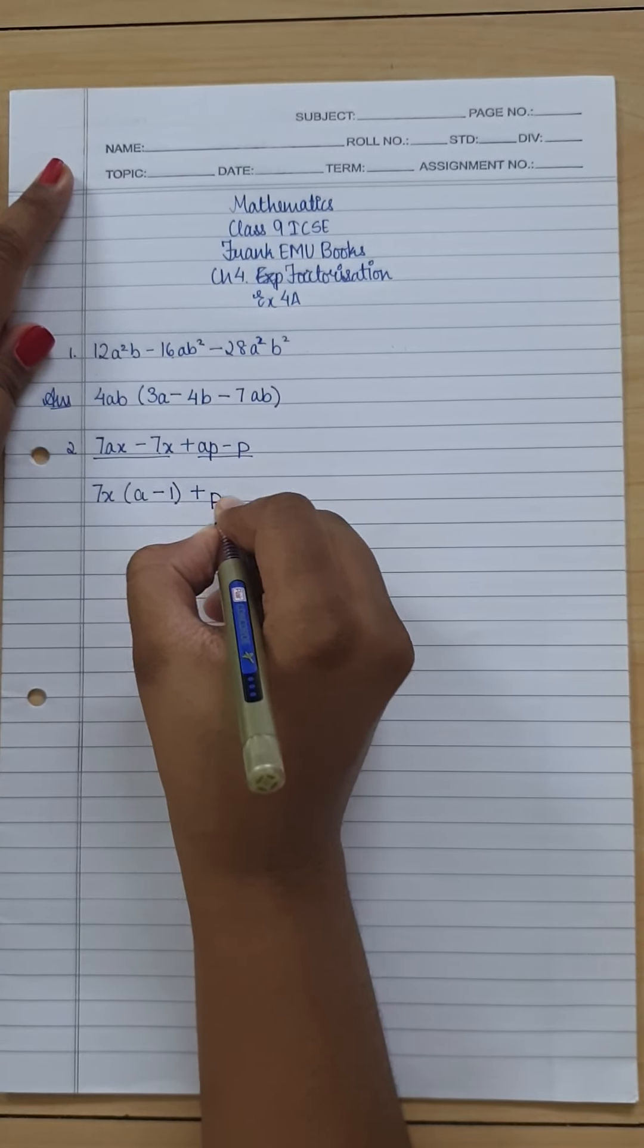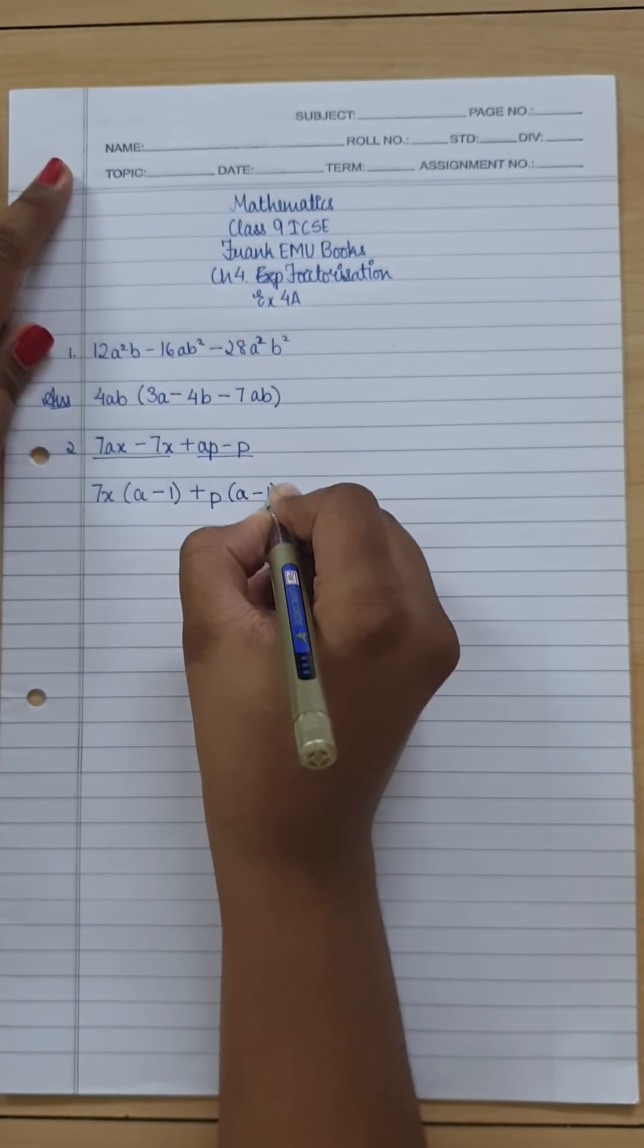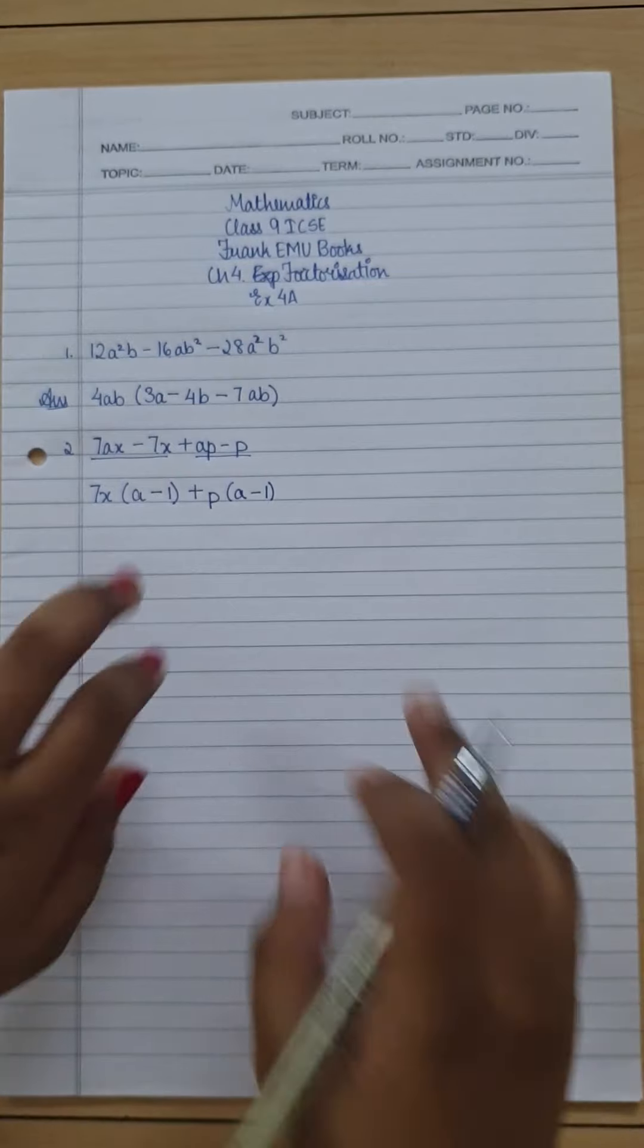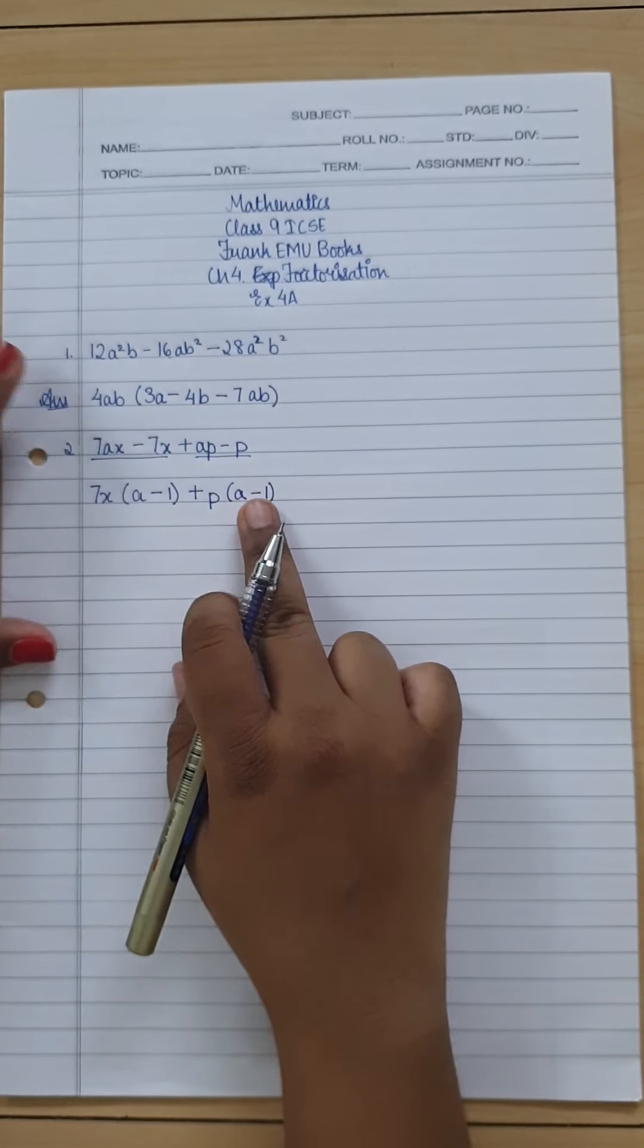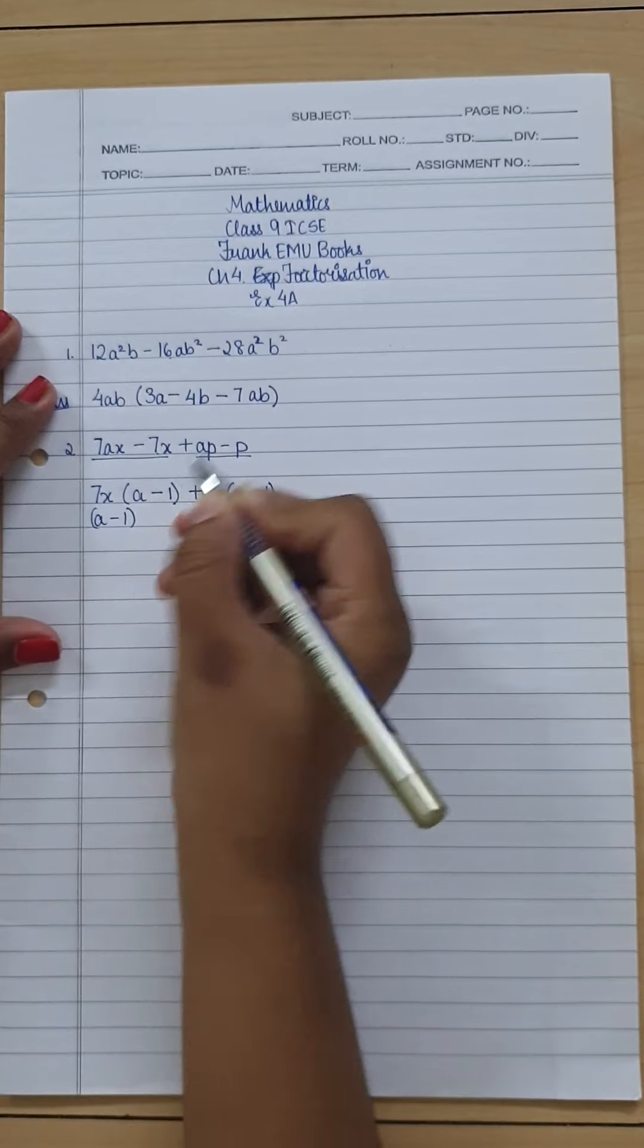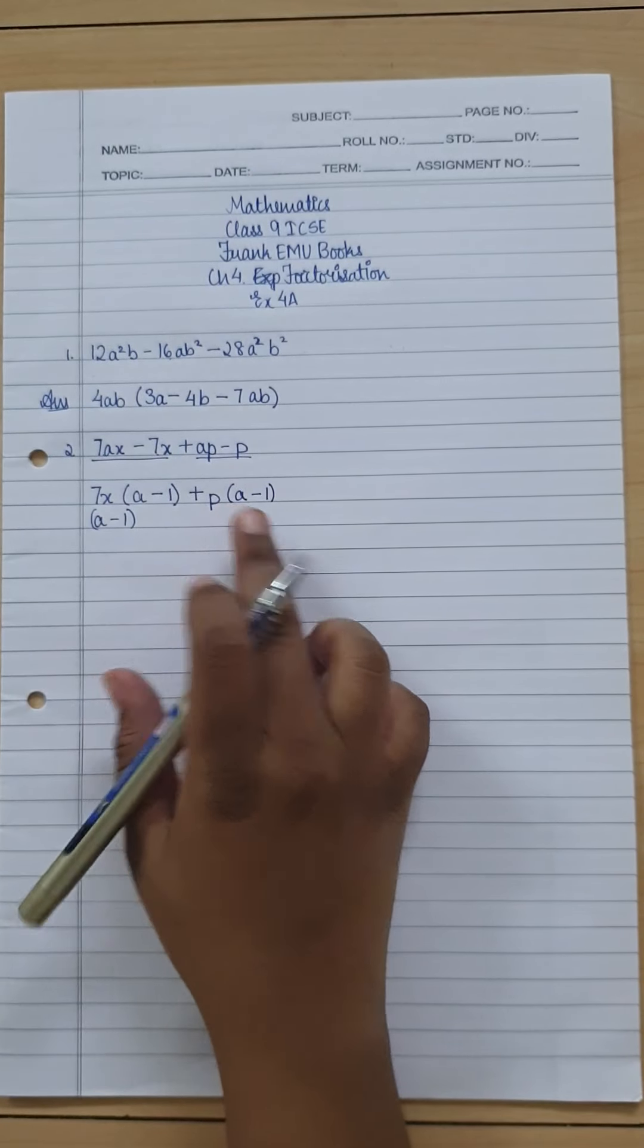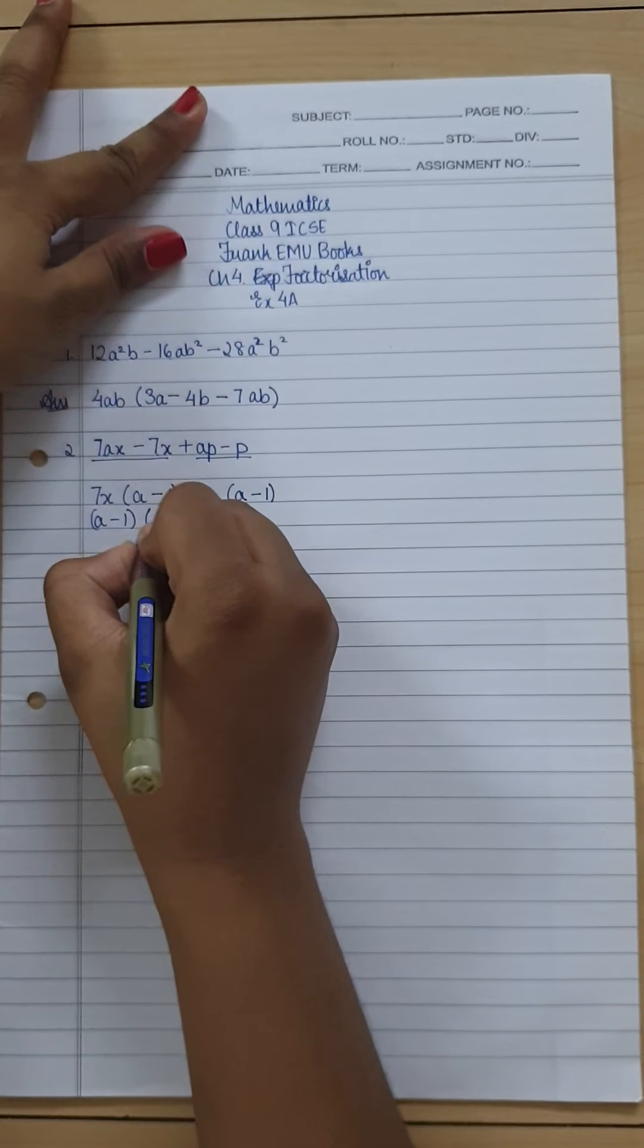Plus, p is common in both the terms, so I take p over here, and a again is missing, minus 1. Now when we are having the common parts equal or the same, you take them aside and then whatever is in the uncommon part outside the brackets, you club them inside a bracket and multiply it. So 7x + p, and that's the answer for your second question.